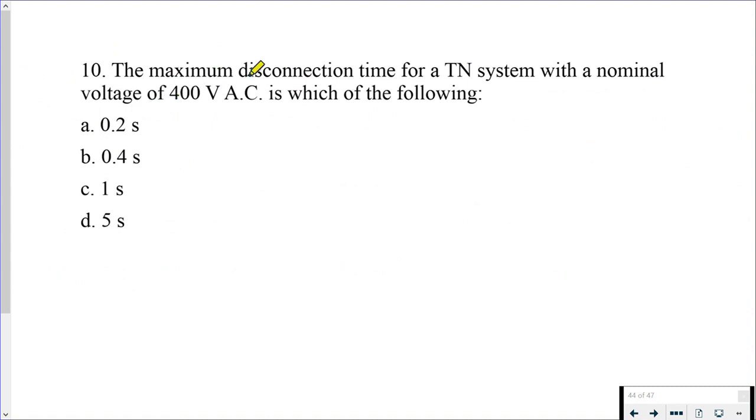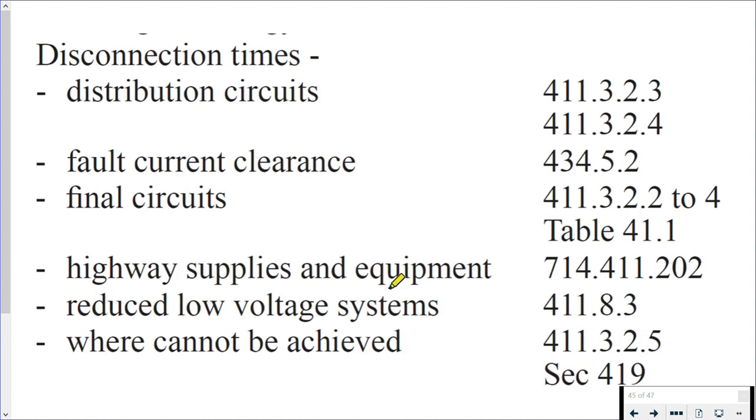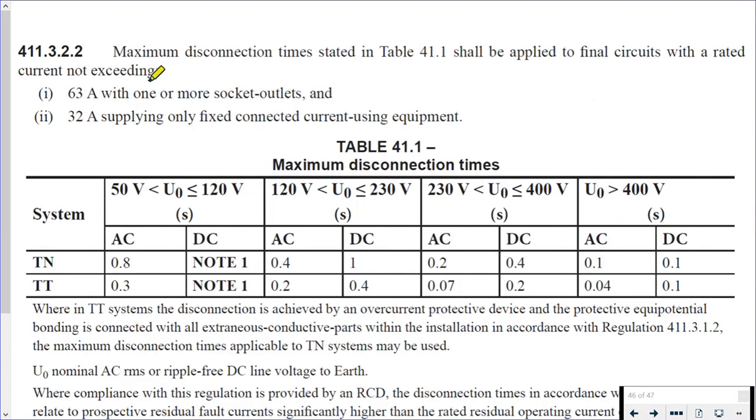Question 10: the maximum disconnection time for a TN system with a nominal voltage of 400 volts AC is which of the following? So it's a disconnection time, we're looking at disconnection times max, and we're also going to be looking at that 400 volts. If we have a look at disconnection times, we have distribution circuits, fault clearance, and final circuits. Now the fact that it didn't mention distribution circuits leads me to believe that we are looking at final circuits. So final circuits, 411.3.2.2 and table 41.1. If we look at 411.3.2.2, that gives us the basic general circuits that we're dealing with, and then it takes us to table 41.1. We've got that less than or equal to 400 volts. So for a TN system, for a 400 volt TN system, it's 0.2 of a second.